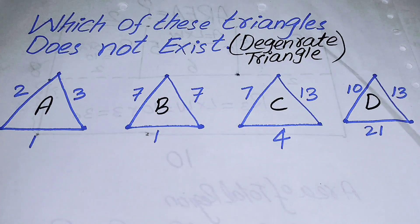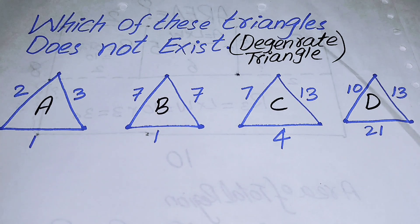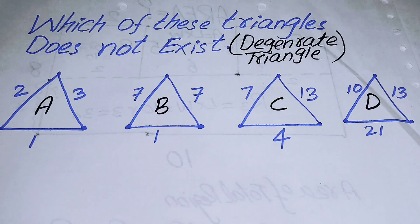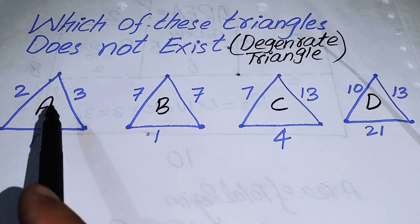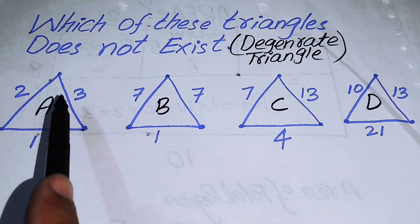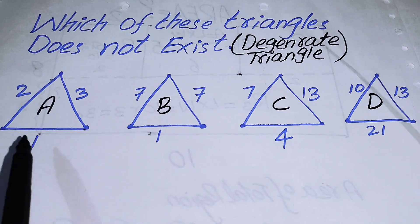Hello everyone, welcome back to the Map of Mathematics. In this video we are going to check which of these triangles does not exist, or which one is a degenerate triangle, or if all of these are degenerate triangles. We will discuss the concept of a degenerate triangle. You already know the basics of triangle — it has three vertices and three sides.